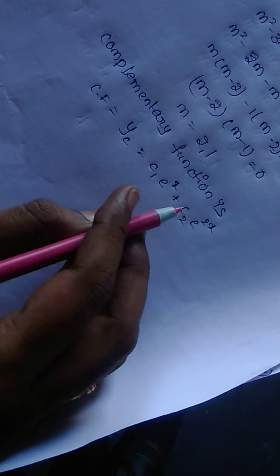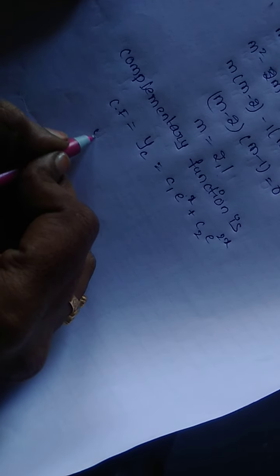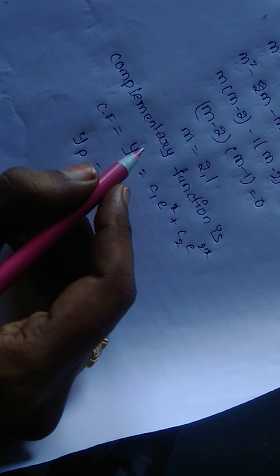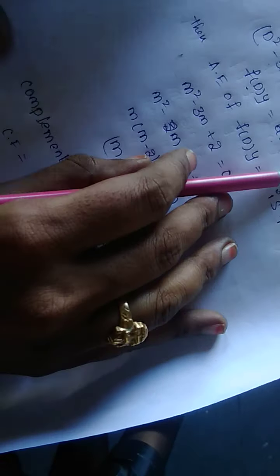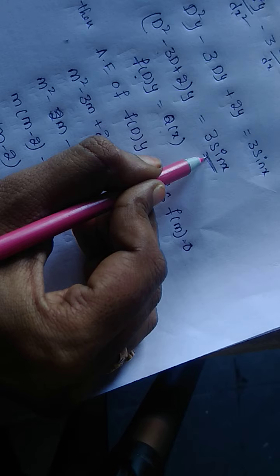Next, we find the particular integration yp. The particular integration is found based on Q(x). Here Q(x) is 3 sin x.